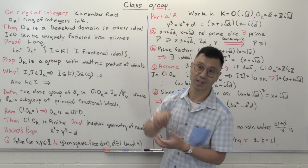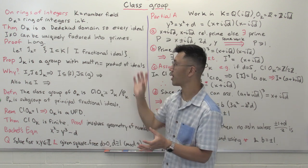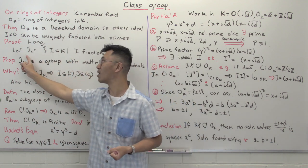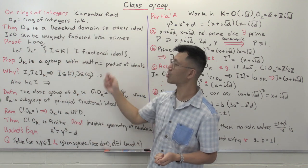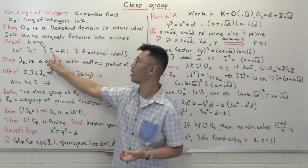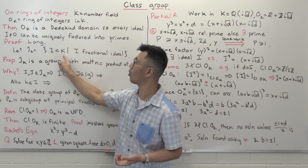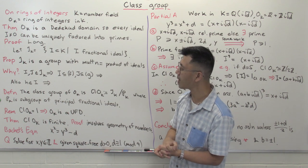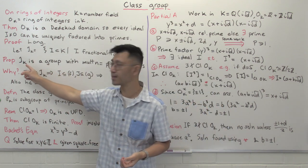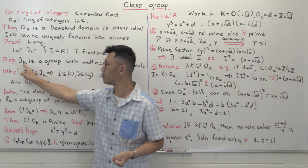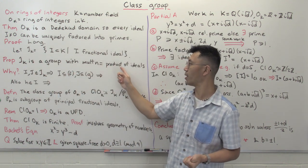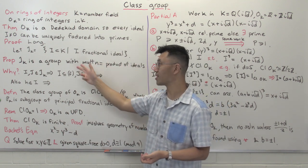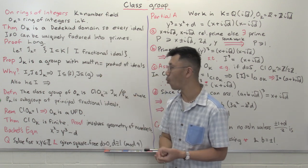Let me move on to defining what the class group is, which is quite interesting and allows us to use this theorem quite efficiently. My starting point is to introduce the set script I_k, which is just going to be the set of all fractional ideals — all Ok-submodules of k which are contained in some principal fractional ideal. The proposition is that this set of fractional ideals is actually a group when endowed with a multiplication given by the product of ideals. Let's examine what this means and show why it's true.